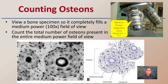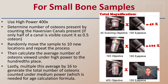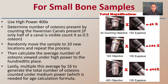When looking through the microscope, we count the osteons. Use the bone specimen so it completely fills a medium power or 100x field of view. Count the total number of osteons present in the entire medium power field. The medium power objective lens is 10x, combined with the eyepiece which adds another 10x, giving 100x total. For high power at 400x, that would be the 40x objective times 10. If only half of a canal is visible, count it as 0.5 of an osteon.